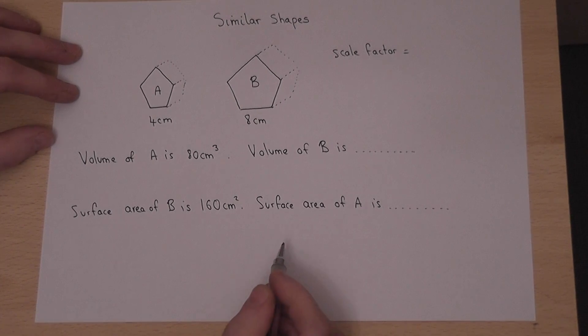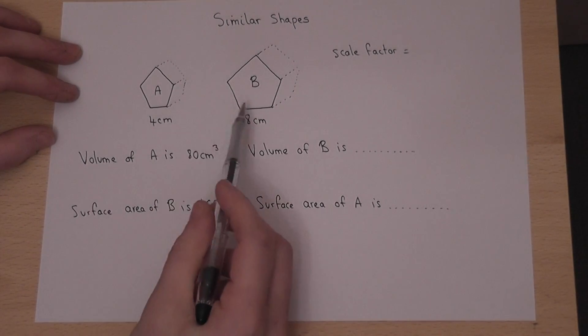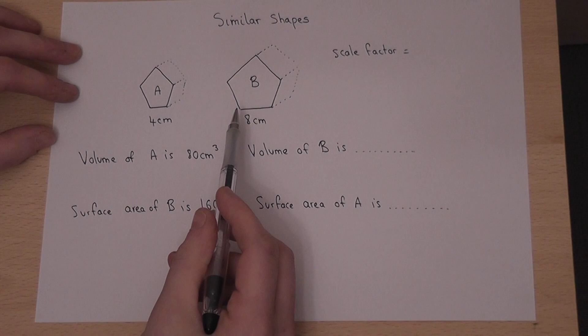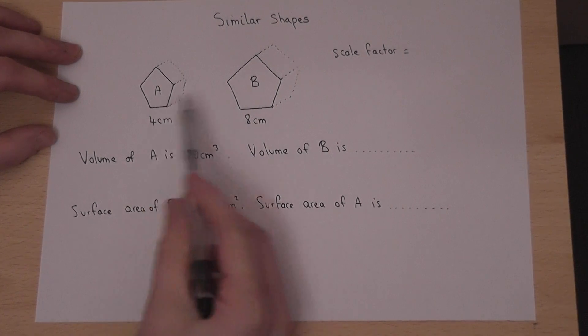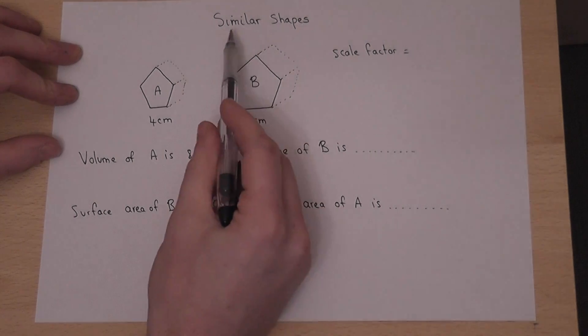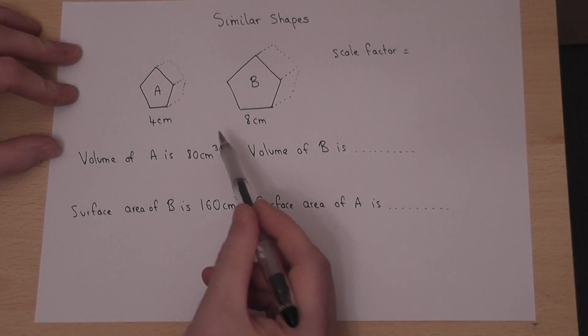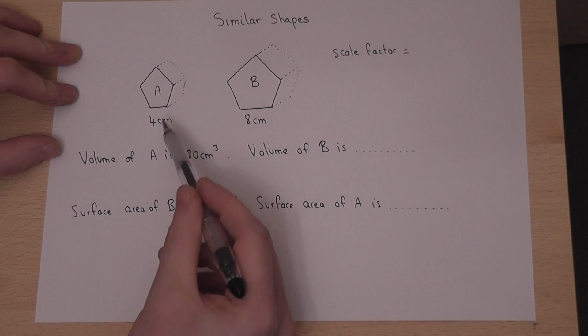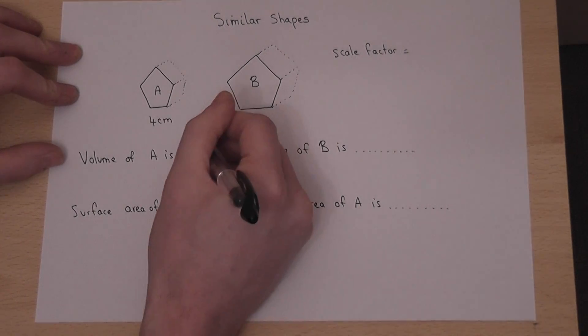In this question we're given two similar shapes. They're both prisms with a pentagon face. Now these shapes are similar, which means there's a scale factor which connects the two shapes, and it's very obvious